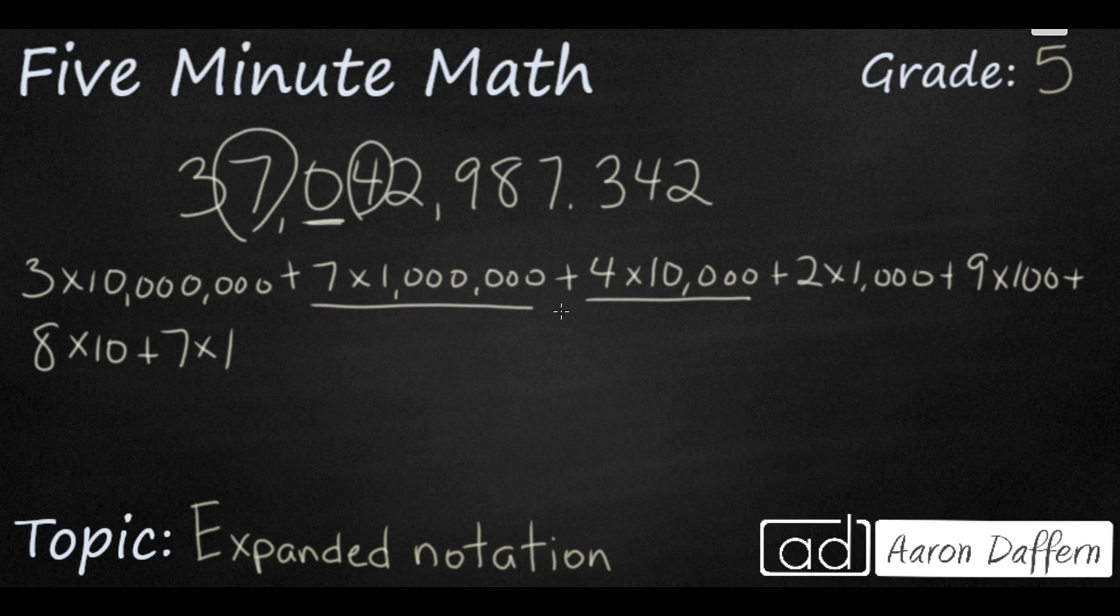Now, let's go to the decimal part. That's the tricky part. You're going to first deal with that 3 and that 3 is in the tenths place. So, you can either write it as a decimal, 3 times 0.1, or as a fraction, 3 times 1 tenth.